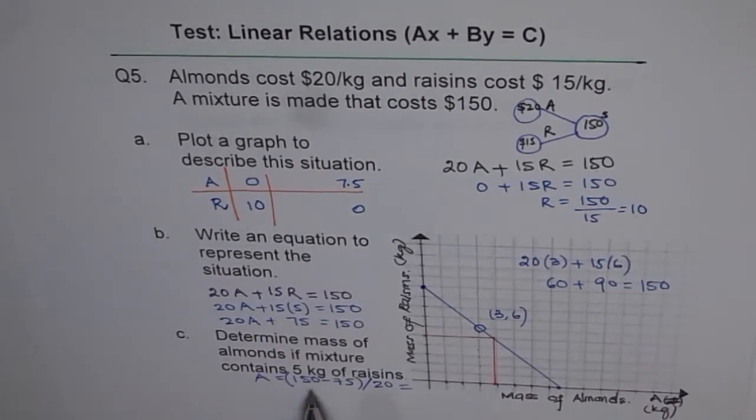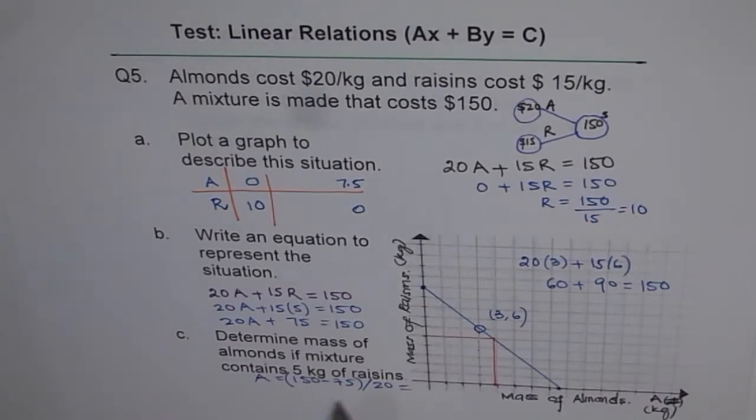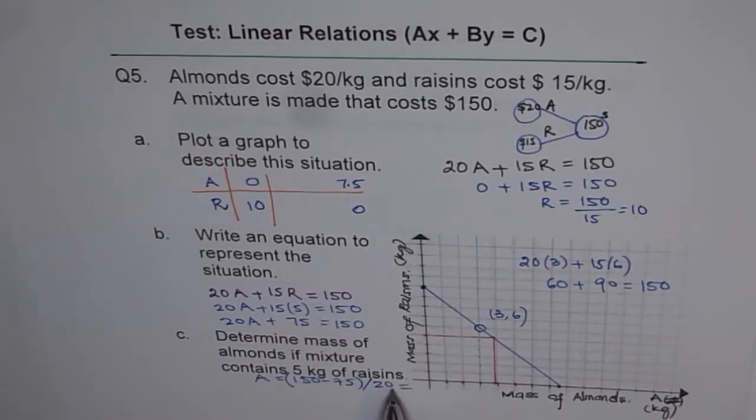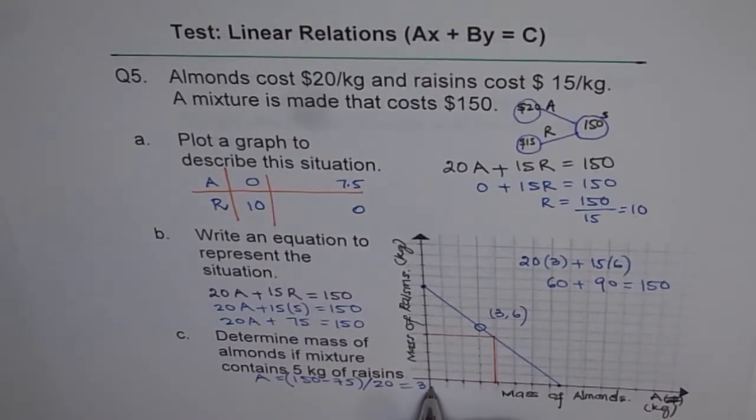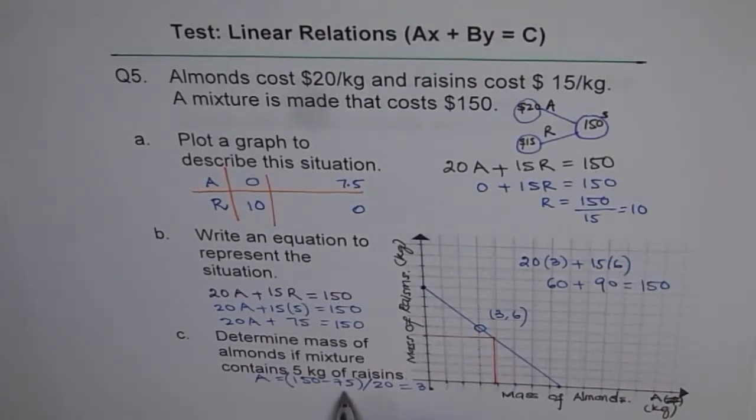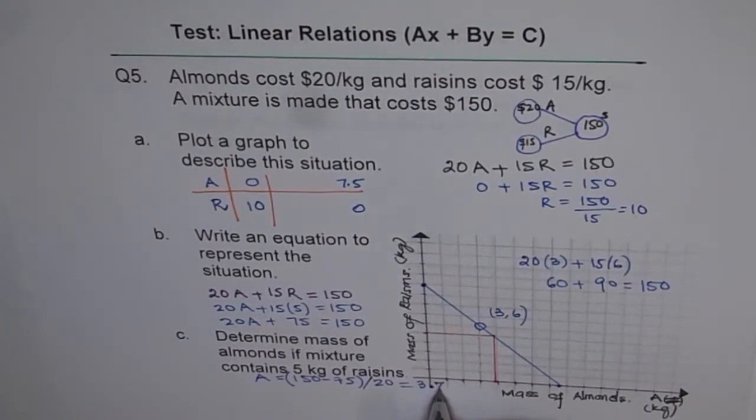So we can use our calculator. 150 minus 75 is 75. And when you divide by 20, you get half of 70 point with a decimal here. So it comes 3 goes into... 2 goes 3 times 6 and 15. So 3.75.